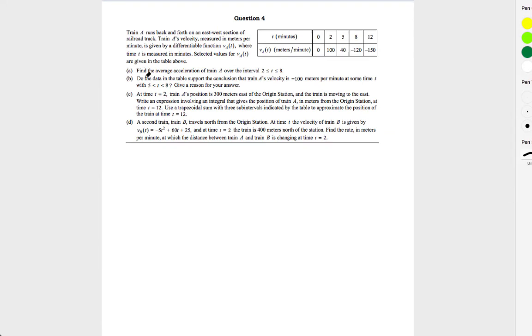Number four, a lot of people struggled on this problem. For part A, it says find the average acceleration. So, they give you velocity. So, acceleration would just be the slope, right? We're taking the derivative of it. So, we're going to do V of 8 minus V of 2 all over 8 minus 2. Then you would just use your table. So, you have minus 120 minus 100 all over 6. And that simplifies to negative 110 over 3. And our units are going to be meters per minute squared because we have acceleration.